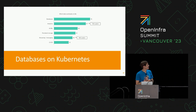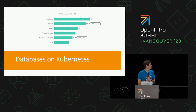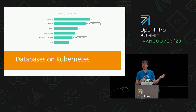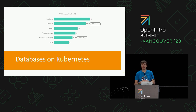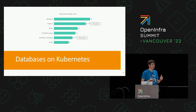Here is specific data-intensive applications people are deploying on Kubernetes, and you can see databases, analytics, AI, machine learning — those are the top three foundational data applications, followed by persistent storage and others.